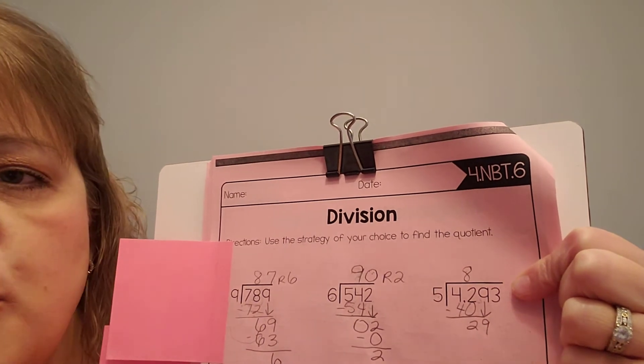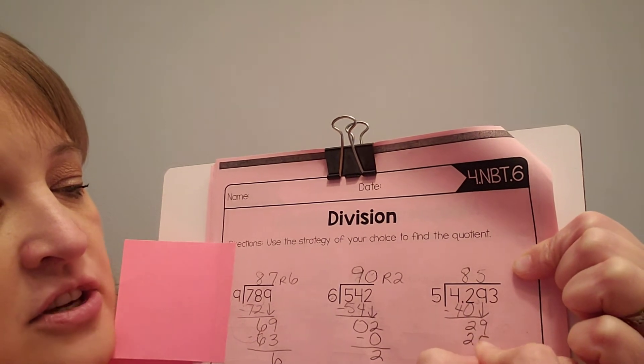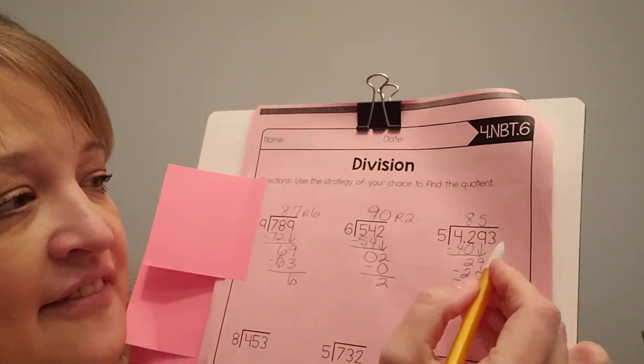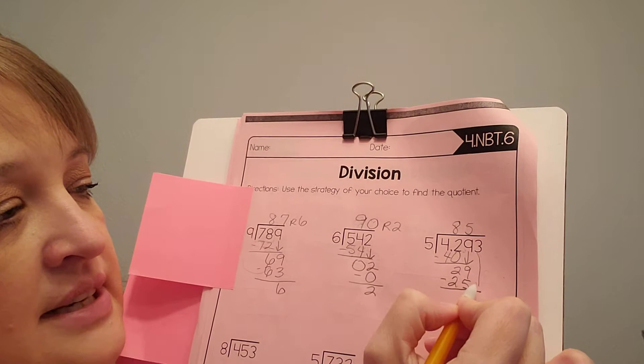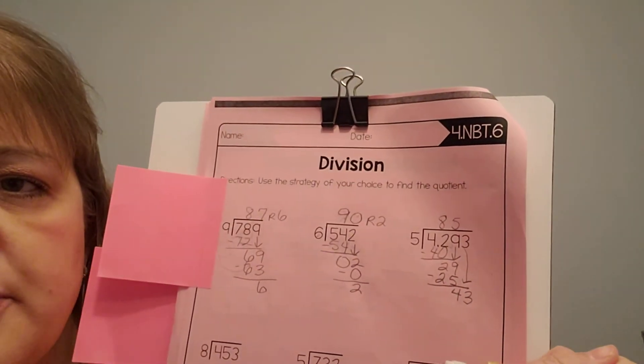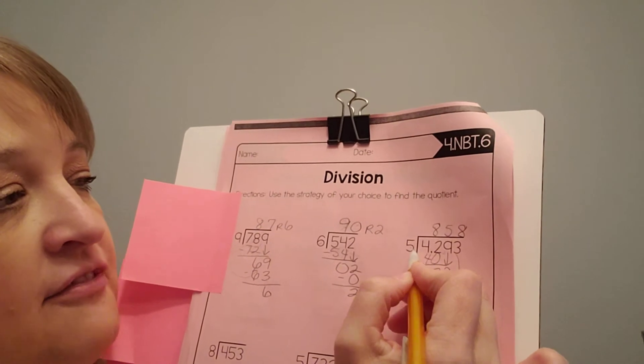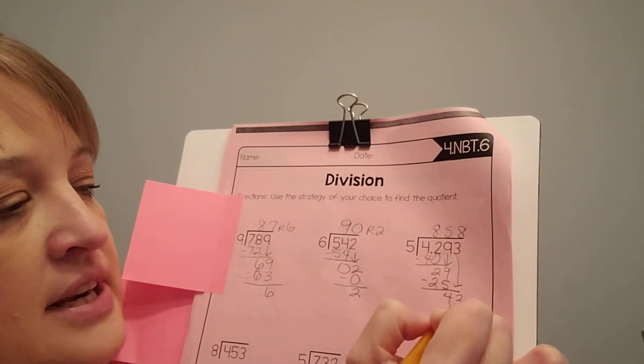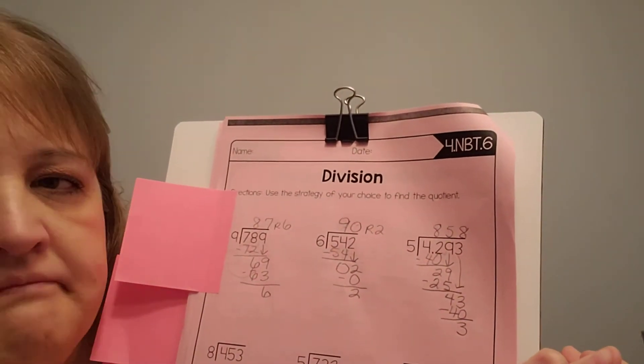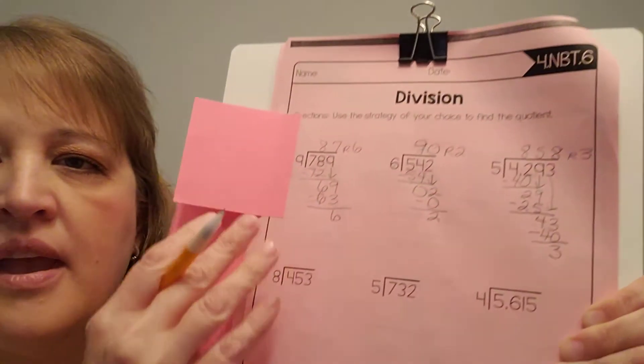Bring down the 9. How many 5s are in 29? There are 5 because 5 times 5 is 25. I'm going to subtract and get 4. But I have another number to bring down. So I'm going to bring down the 3. How many 5s are in 43? Well, there's 8 in 40. So I'm going to put an 8. 5 times 8 is 40. Subtract and get 3. Are there any other numbers to bring down? Nope. So my remainder is 3.